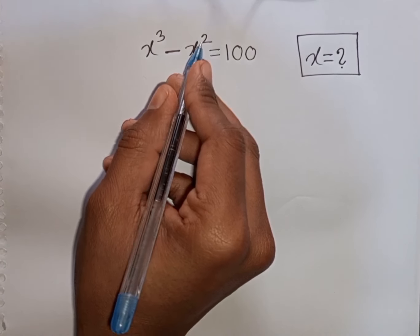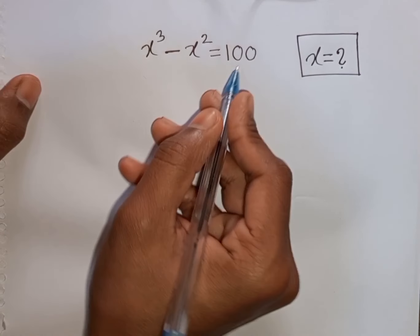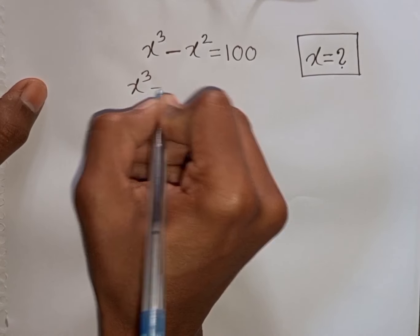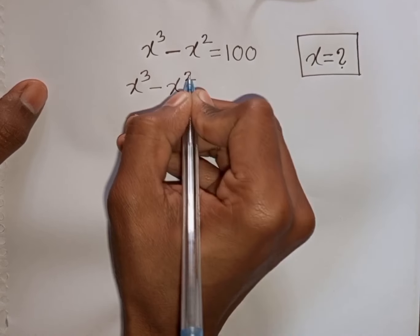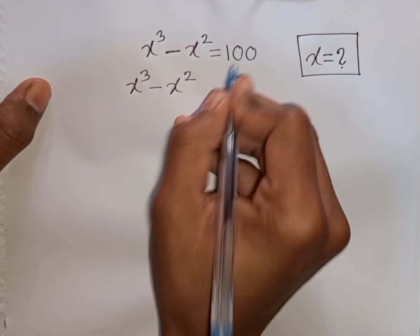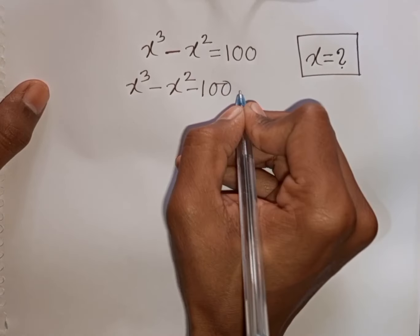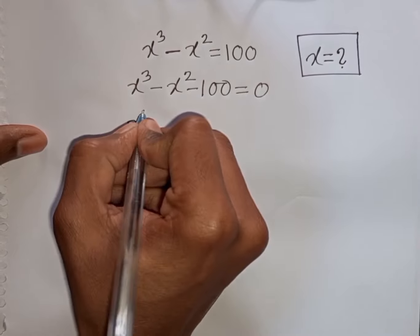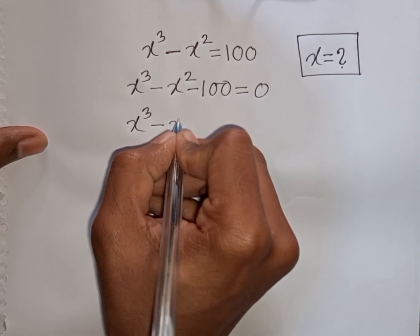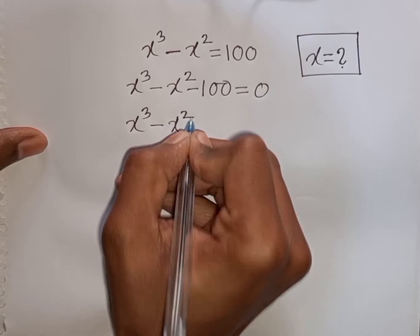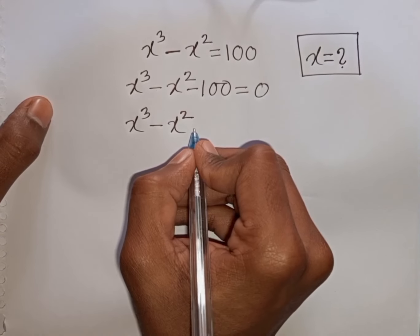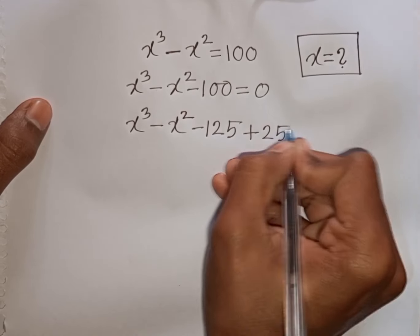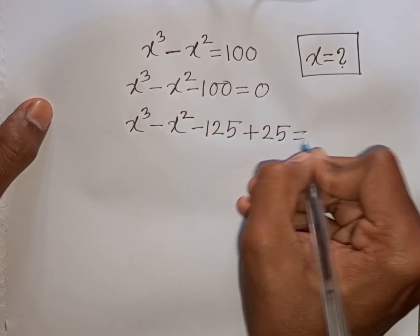x power 3 minus x power 2 is equal to 100. Find the value of x. We have x power 3 minus x power 2. Bringing 100 to the left side, it becomes minus 100, and then is equal to 0. Now we have x power 3 minus x power 2 minus 100, and minus 100 can be written as minus 125 plus 25, giving us equal to 0.